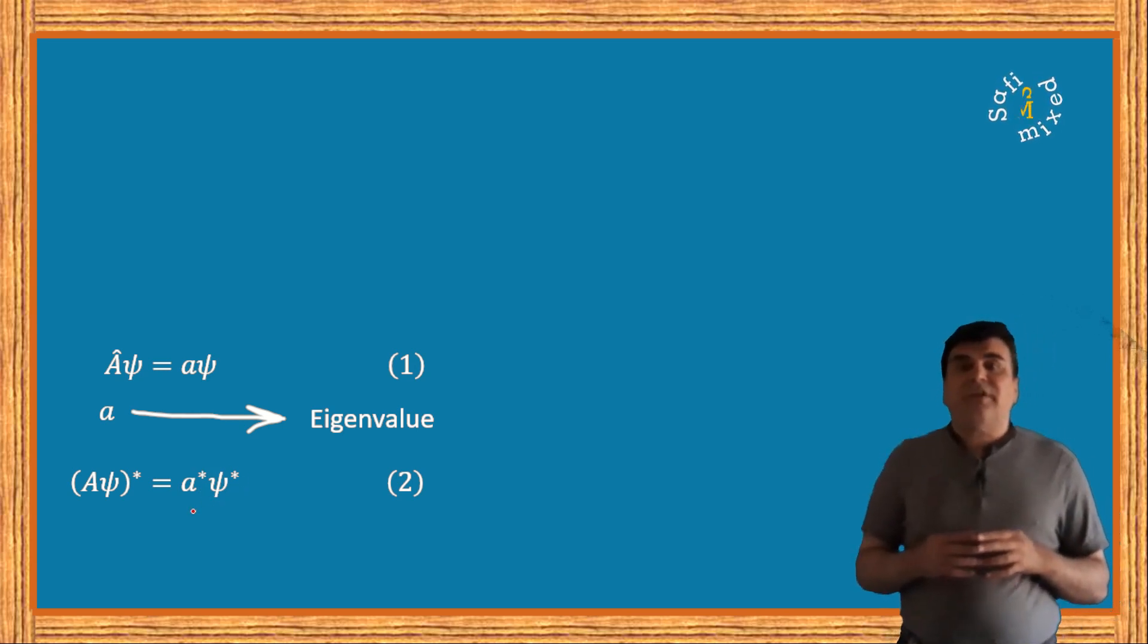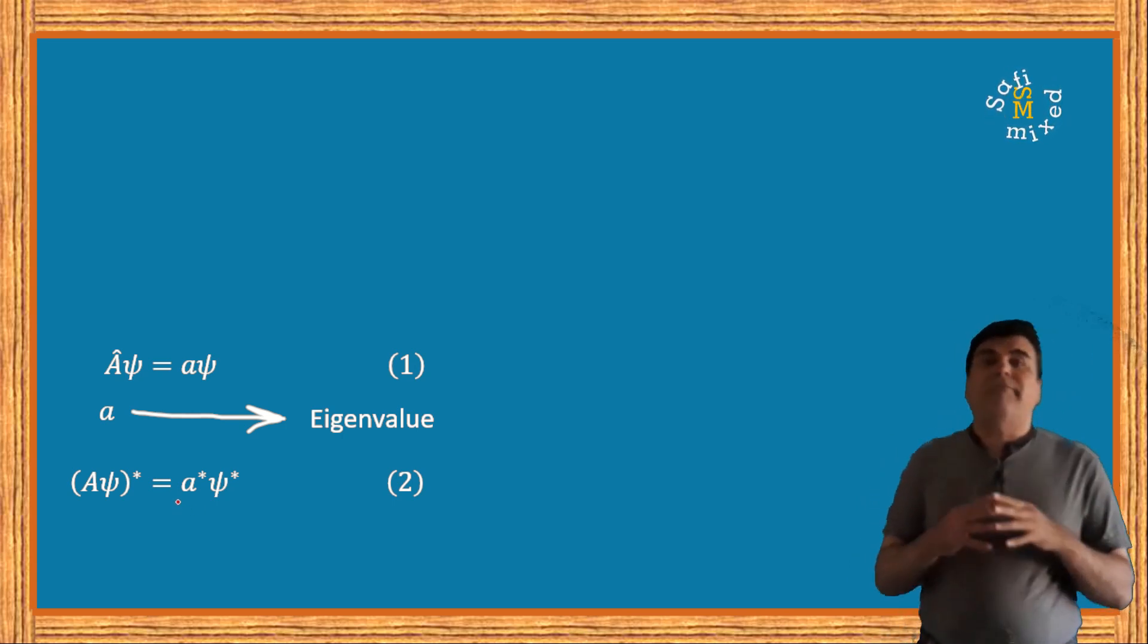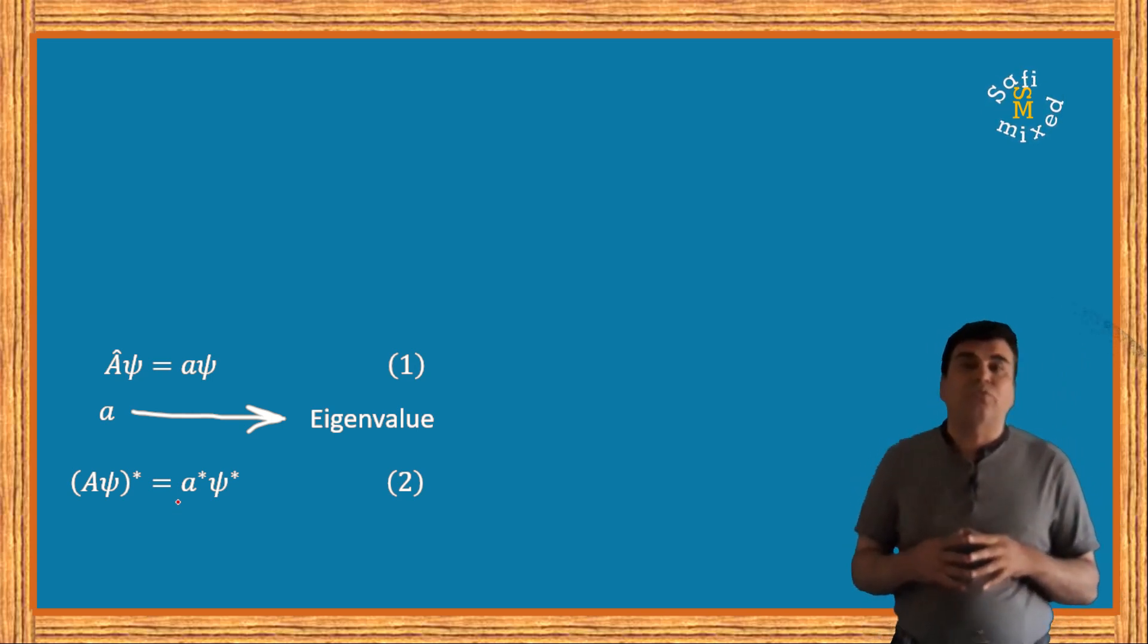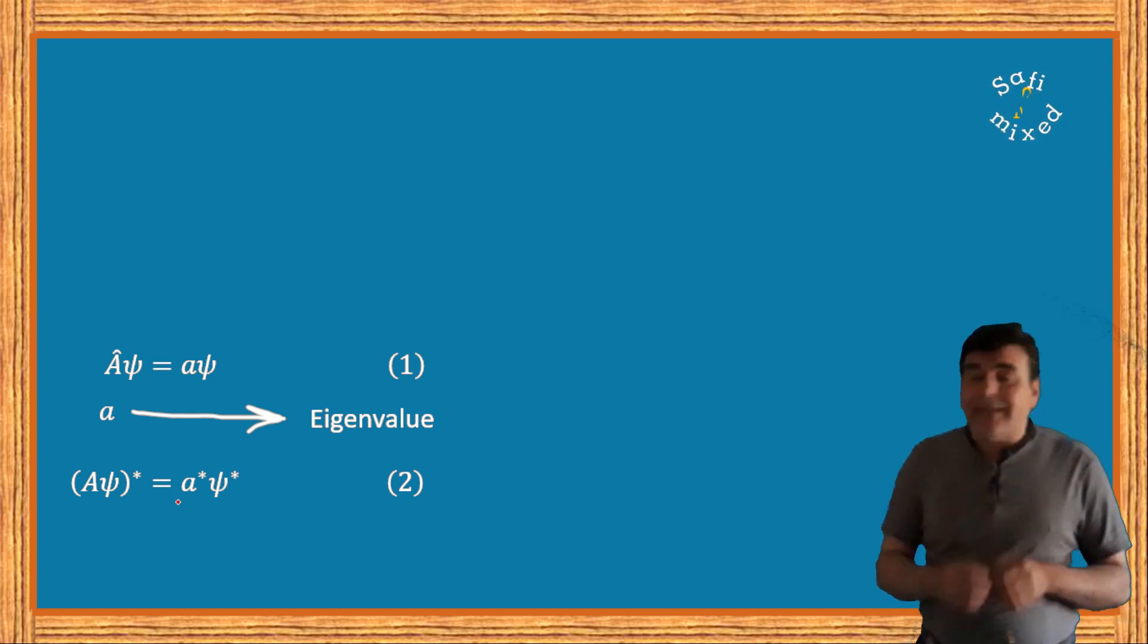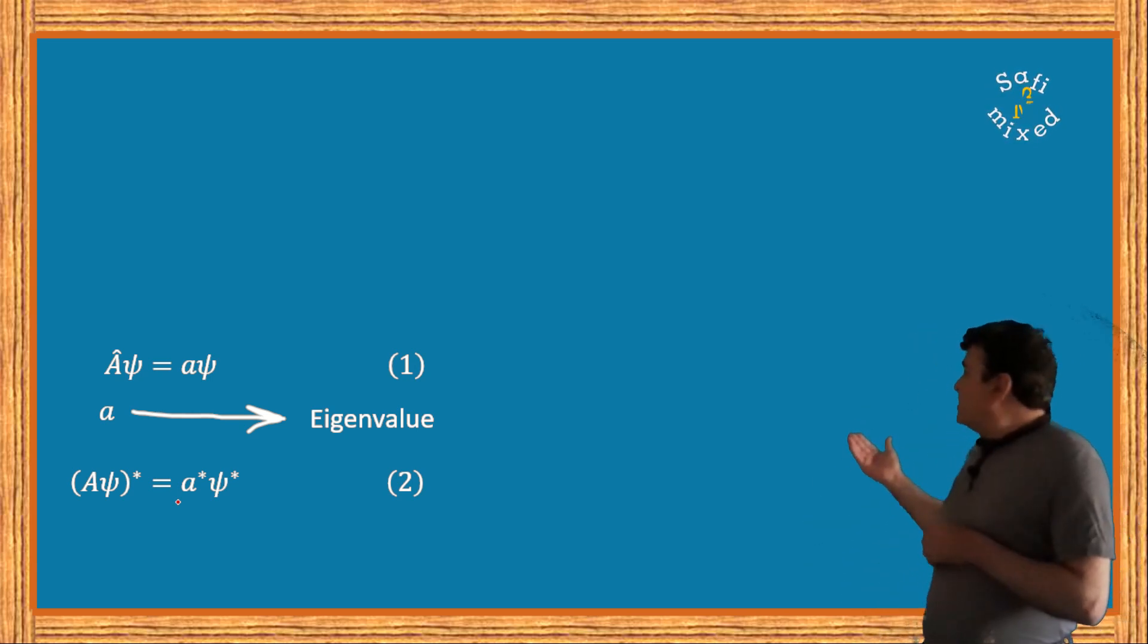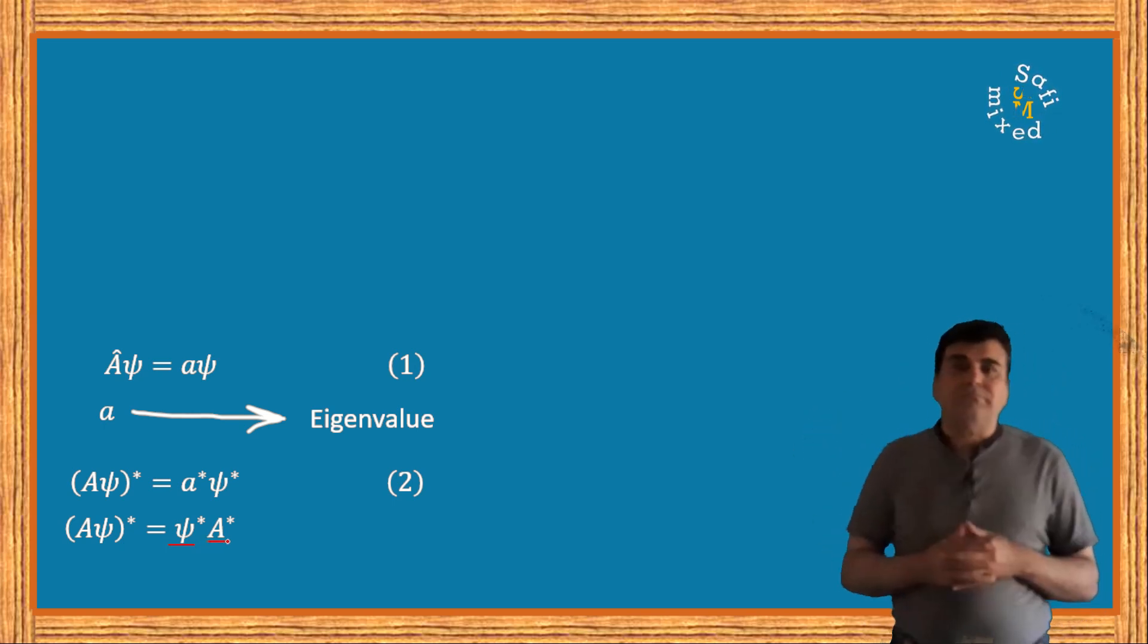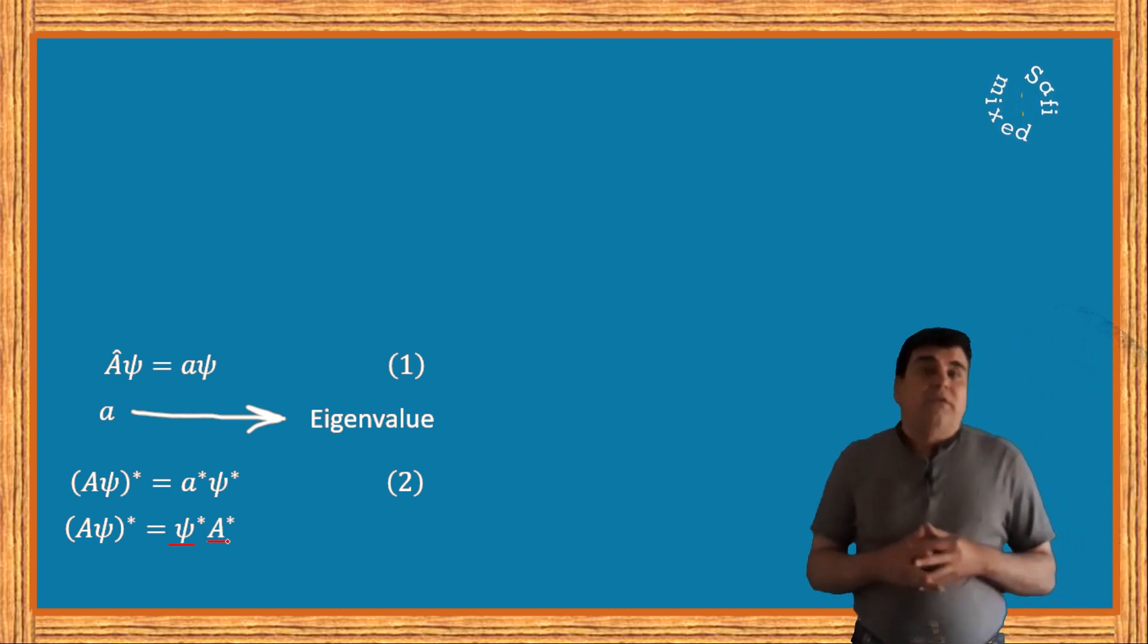The reason is that the complex conjugate of the product of operators or the product of an operator and a function reverses the order in multiplication when expressed in the form of individual conjugation. That is, the complex conjugate of the whole of A applied to ψ equals ψ* times A*, whereas for numbers this makes no difference.